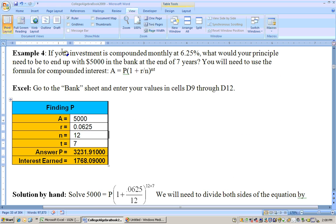Now, here's why we're actually doing this problem is because on example 4, it says if your investment is compounded monthly at 6.25 percent, what would your principal need to be to end up with $5,000 in the bank at the end of seven years? And again, we'll need to use the same formula. Now, on this particular problem, let's take a look at solving it by hand here a second.